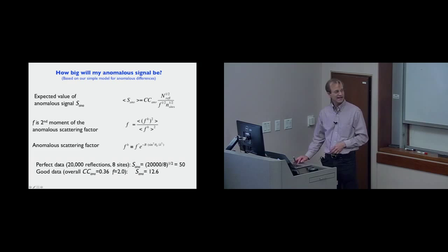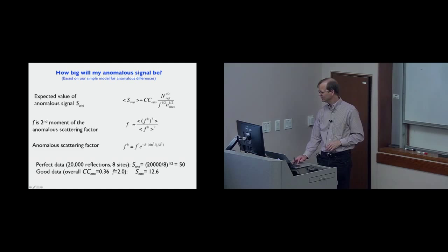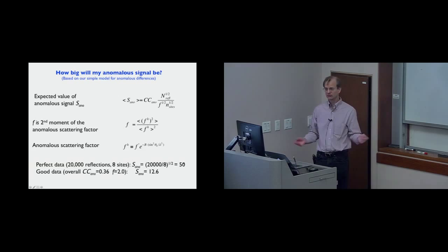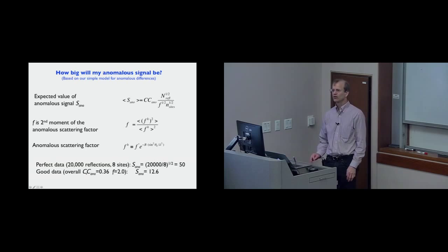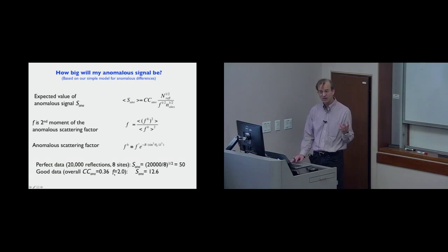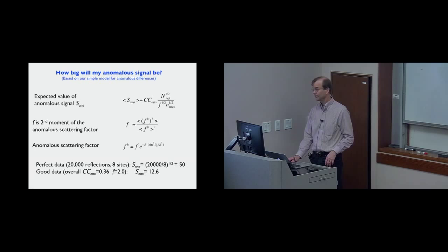Let's consider a real example. Suppose we had perfect data with 20,000 reflections and eight sites. If everything were perfect (CC-ANO = 1), our anomalous signal would be sqrt(20,000/8) = 50. That's the best possible for a data set with 20,000 reflections and eight sites. Realistically, the anomalous correlation overall would be less than one and the B factor would not be zero, so we might get an anomalous signal of say 10 or 12. We can calculate all of those things.